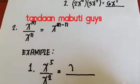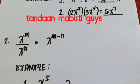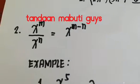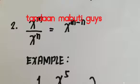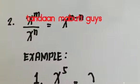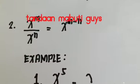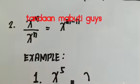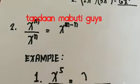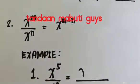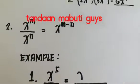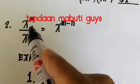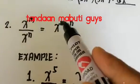Next, number two: if x raised to m divided by x raised to n is equal to x raised to m minus n. So you subtract the exponents when dividing with the same base.